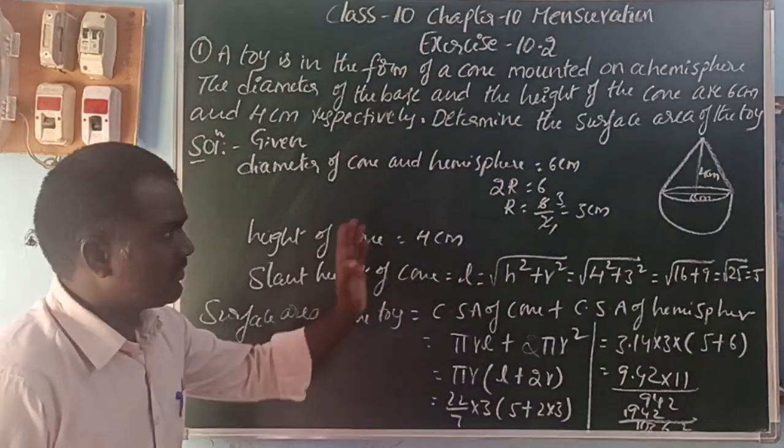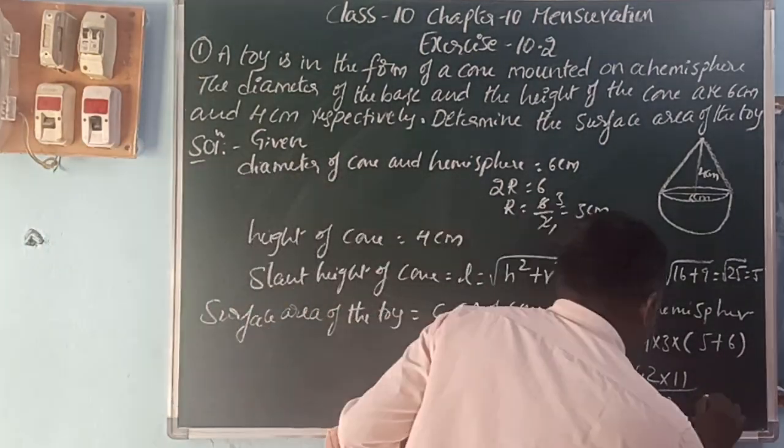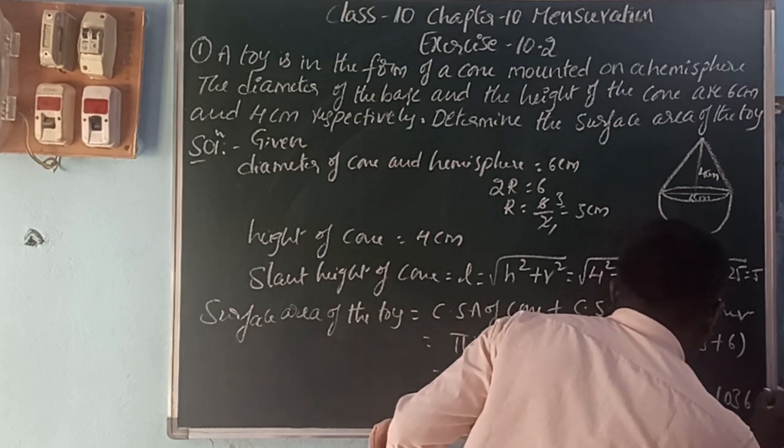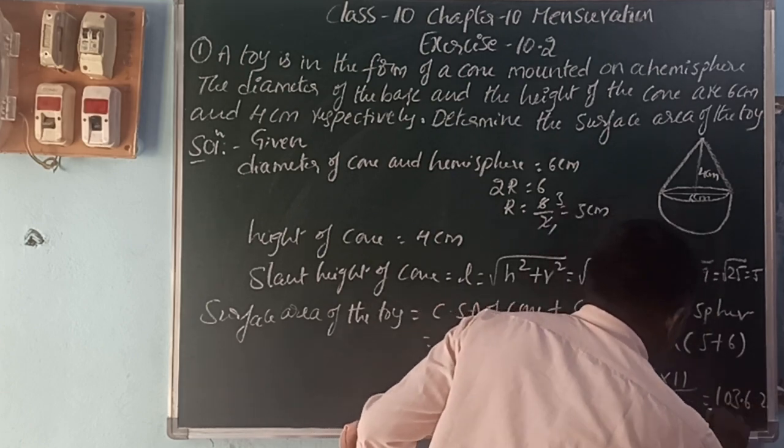726 divided by 7 equals 103.71, which with 2 decimals is 103.62 centimeter square.